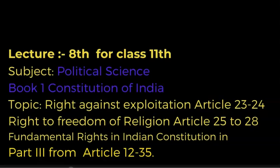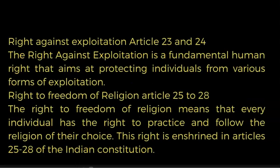These are a series of fundamental rights in the Indian Constitution, found in Part Three from Article 12 to 35. The Right Against Exploitation under Articles 23 and 24 is a fundamental human right that aims at protecting individuals from various forms of exploitation. The Right to Freedom of Religion from Article 25 to 28 provides every individual the right to practice and follow the religion of their choice, enshrined in Articles 25 to 28 of the Indian Constitution.